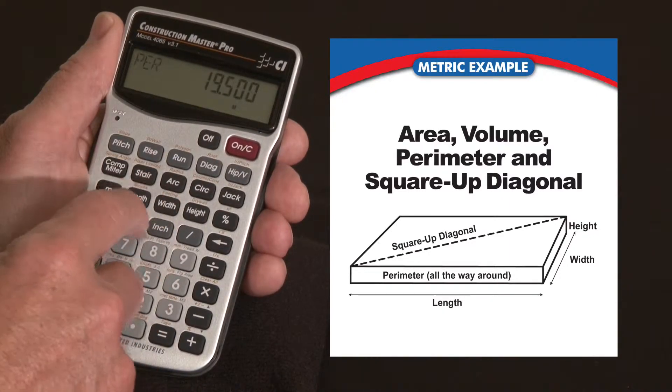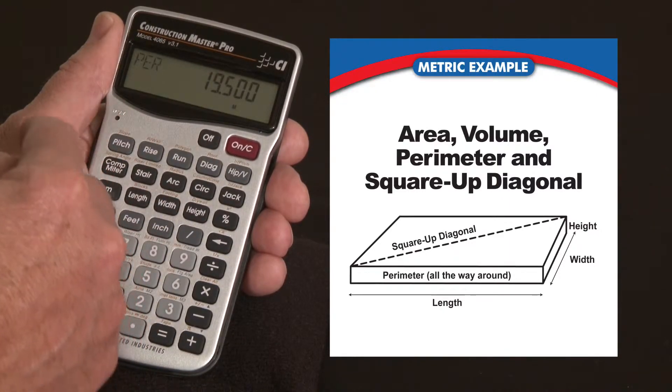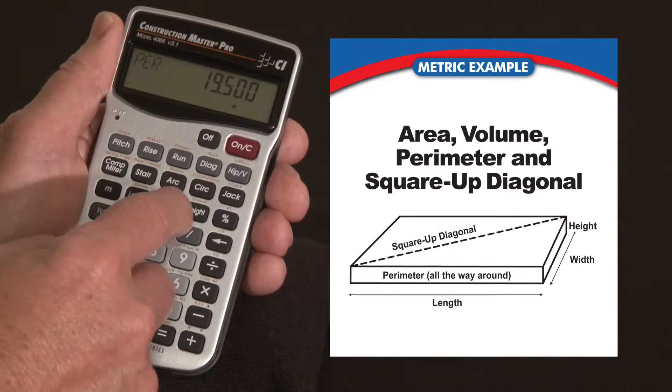Press it again. That's the perimeter. 19.5 lineal meters around the whole perimeter of this pad.